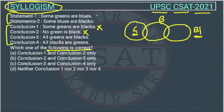Conclusion 3: all greens are black — this is also not possible because the relationship between green and black is not given. Conclusion 4: all blacks are green — this is also not possible.